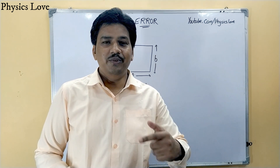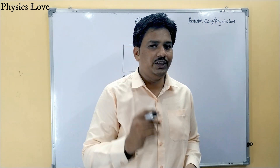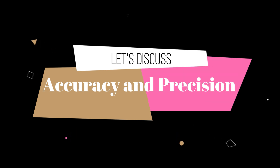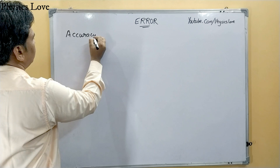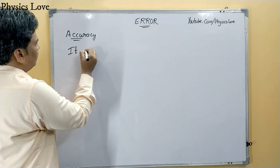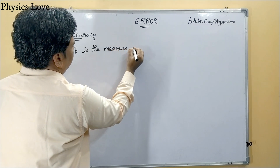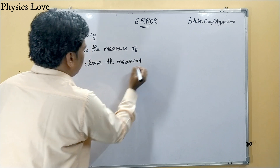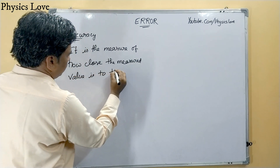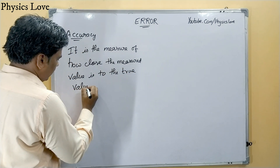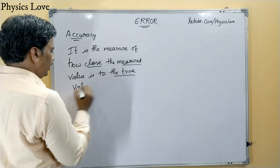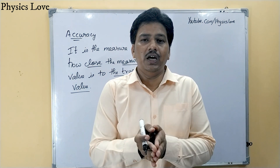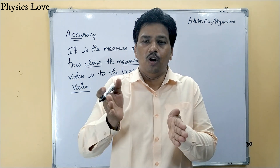Before understanding error properly, we should know two basic terms which are very important: accuracy and precision. The first term is accuracy — it is the measure of how close the measured value is to the true value. Lesser the difference between the true value and the measured value, more will be the accuracy.